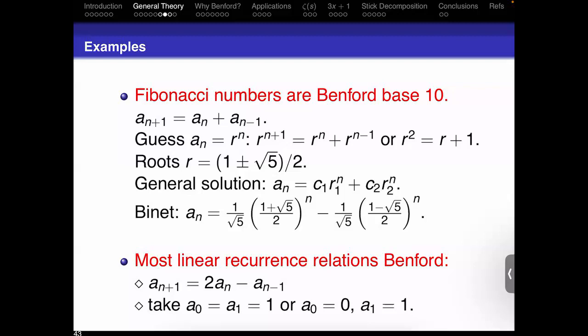One way to show something is Benford is to show that its logarithm mod one is equidistributed — that the fraction of time it lands in any sub-interval of [0,1] equals the length of that sub-interval. We had this beautiful result: if beta is irrational, then n·beta mod one is equidistributed. Clearly beta must be irrational, because if beta is something like one-fifth you just cycle through zero, one-fifth, two-fifths, three-fifths, four-fifths and repeat. Being irrational is sufficient.